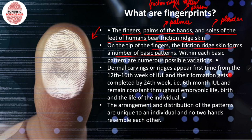On the tip of the fingers, the friction ridges form a number of basic patterns. There are three basic patterns: whorls, arches, and loops — I'll discuss these in detail in the classification of fingerprints video. Within each basic pattern there are numerous possible variations, and these are due to minutiae. I'll be discussing all these terms in the classification of fingerprints video.